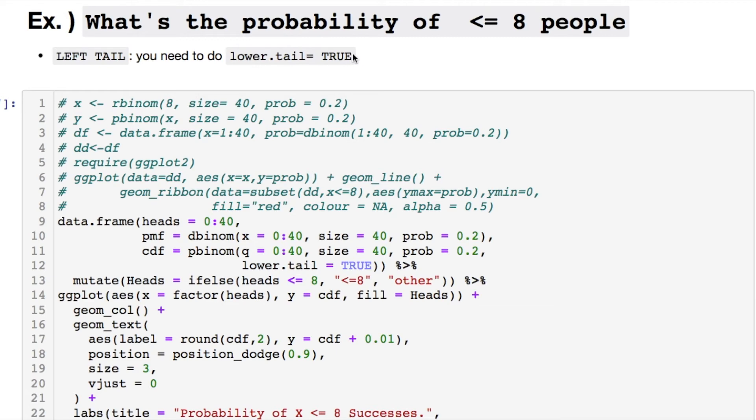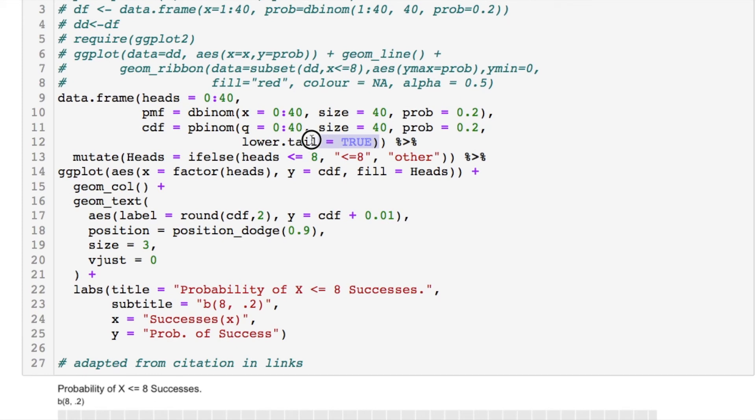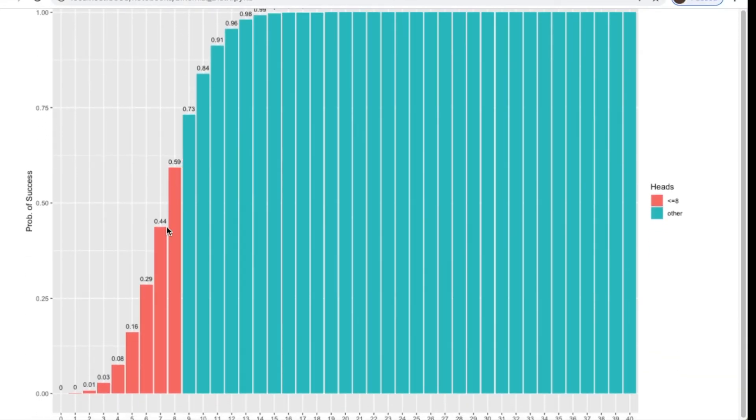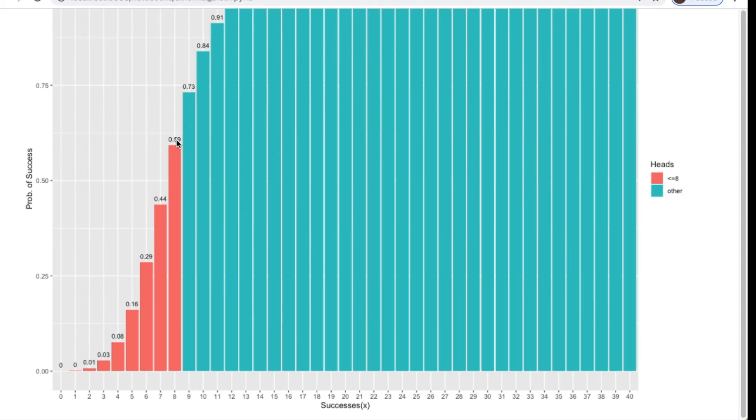Now let's look at less than or equal to 8 people, where in this case we're looking at the left tail and we have to say lower.tail equals TRUE here. That's what's going on with this. If you notice here we're using the pmf and the cdf so we're able to plot this out. Just pay attention to that because we're looking at the less than or equal to. So remember CDF.